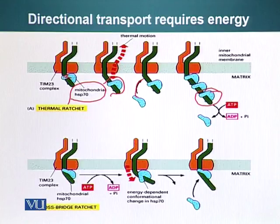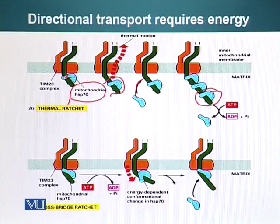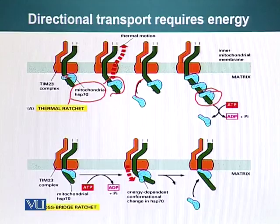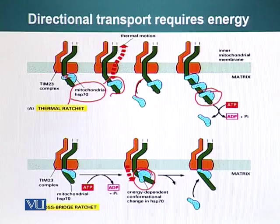The cross-bridge ratchet works on a slightly different principle. Mitochondrial heat shock protein 70 binds the protein as it emerges from the TIM23 complex. It hydrolyzes ATP, converting ATP into ADP, and in doing so the conformation of HSP70 changes, and it tugs or pulls the protein through the pore. This process keeps repeating until the whole protein has moved into the matrix part of the mitochondria.